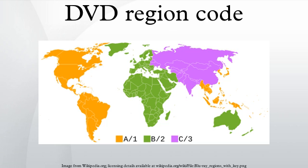One other purpose of region-coding is to prevent release of movies that could be offensive in certain regions for cultural, religious, and political reasons. Region-coding helps prevent release of such films in sensitive territories. Finally, the copyright in some titles has different owners in different territories. Region-coding allows copyright holders to prevent a DVD from being purchased from a region from which they do not derive royalties.